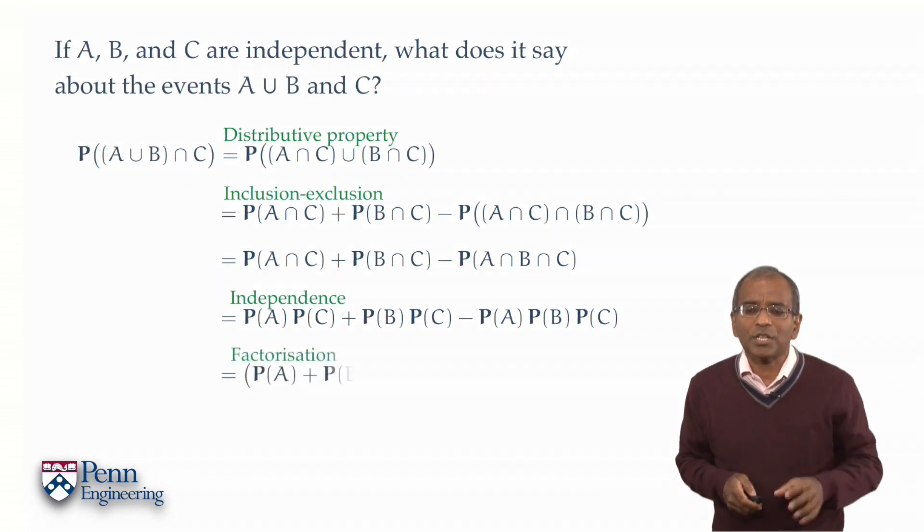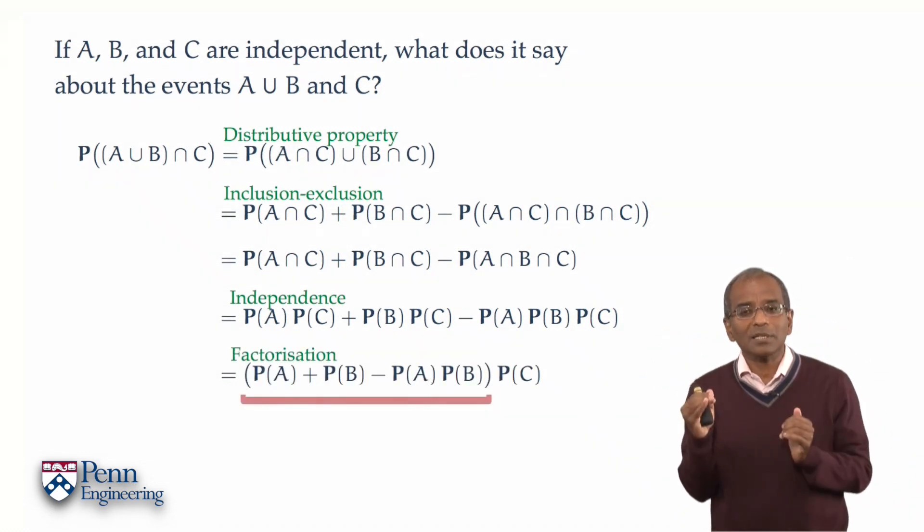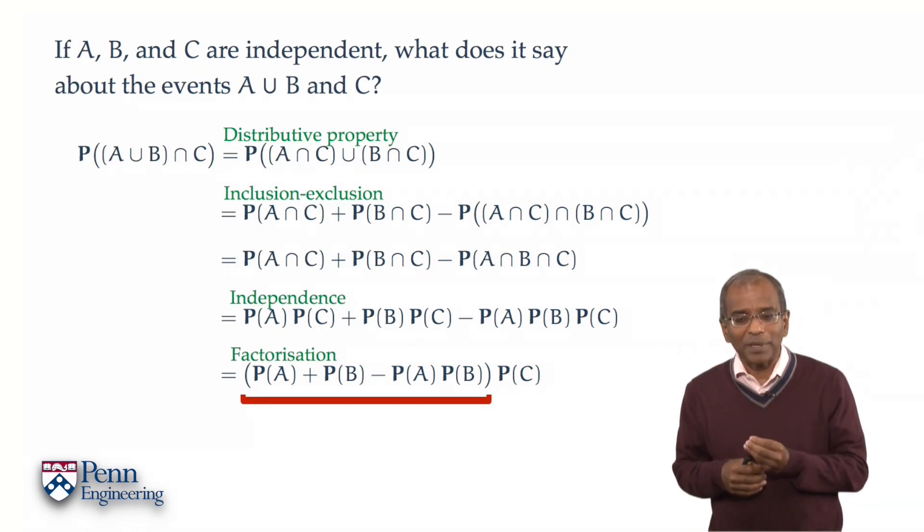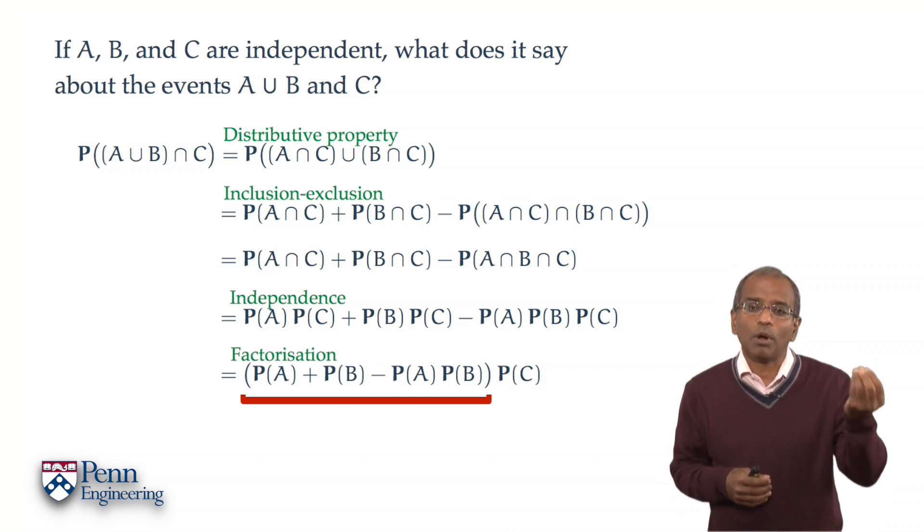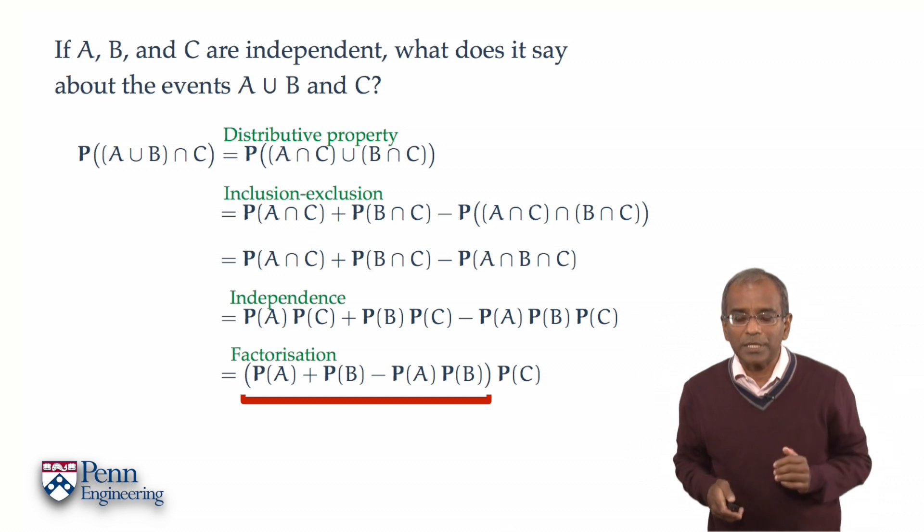A smidgen of factorization takes it out of those terms, leaving in round brackets in front, the probability of A plus the probability of B, from which you take away the probability of A times the probability of B. All of this, of course, multiplied by the probability of C.